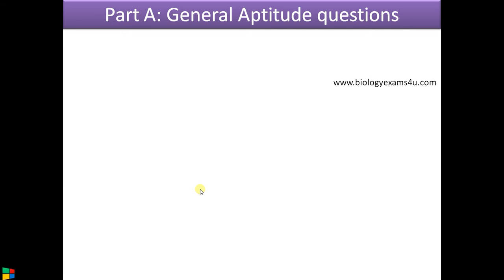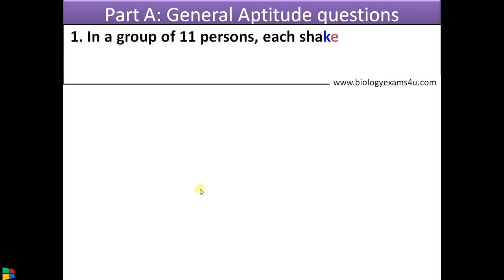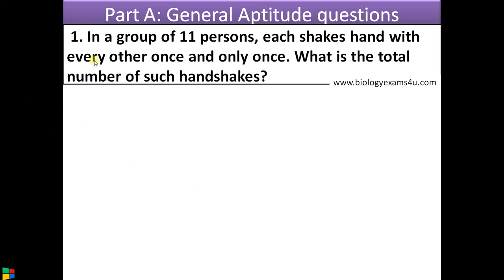Now moving into each part — taking one question from each. Part A is general aptitude questions, not questions from life sciences; these are general aptitude questions. For example: in a group of 11 persons, each shakes hand with every other person only once — what is the total number of handshakes? To answer without an equation is very difficult if we're not in tune with maths.